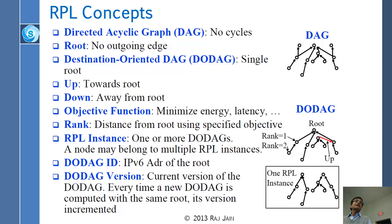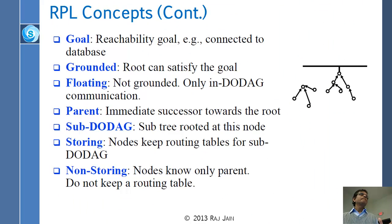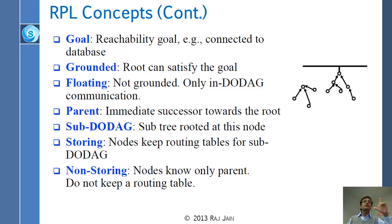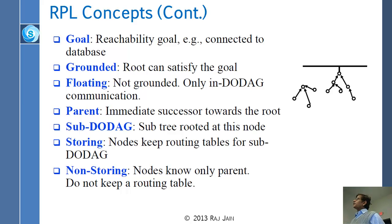The DODAG version number is incremented every time a new DODAG topology is computed with the same root. Now, the objective function relates to energy and latency, but the goal is where you want to go — generally, most people want to reach some wired network, so the goal is to get onto the wire. Don't confuse goal with objective function: goal is where you want to go; objective function is what you want to minimize. If you can reach the goal, the DODAG is called grounded; if not, it is called floating.